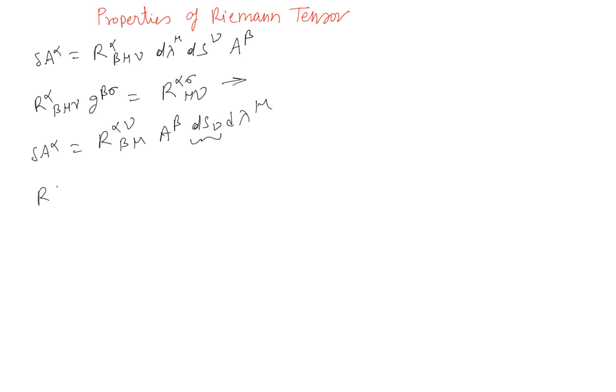You can do the other way around also. If you have alpha beta mu nu, you can contract it with alpha sigma and that gives you R mu nu beta sigma.